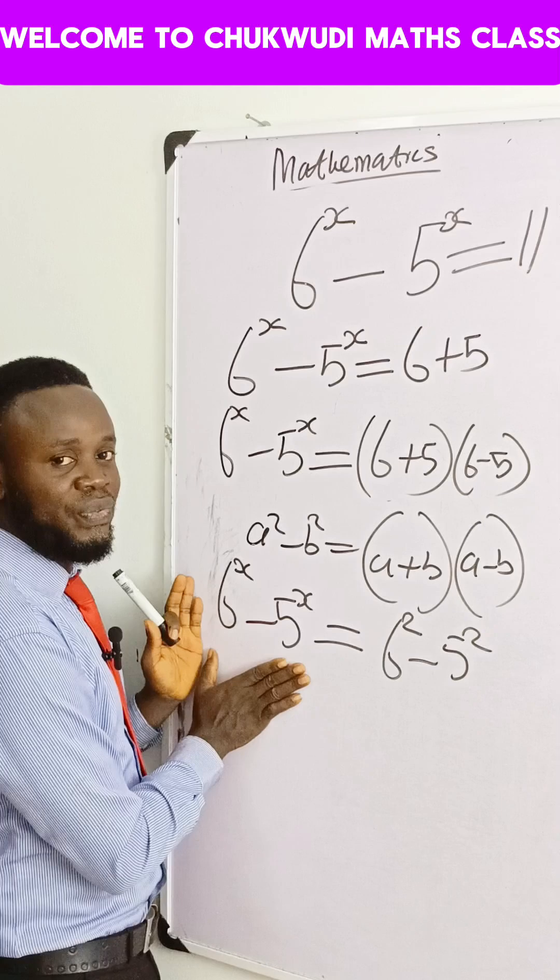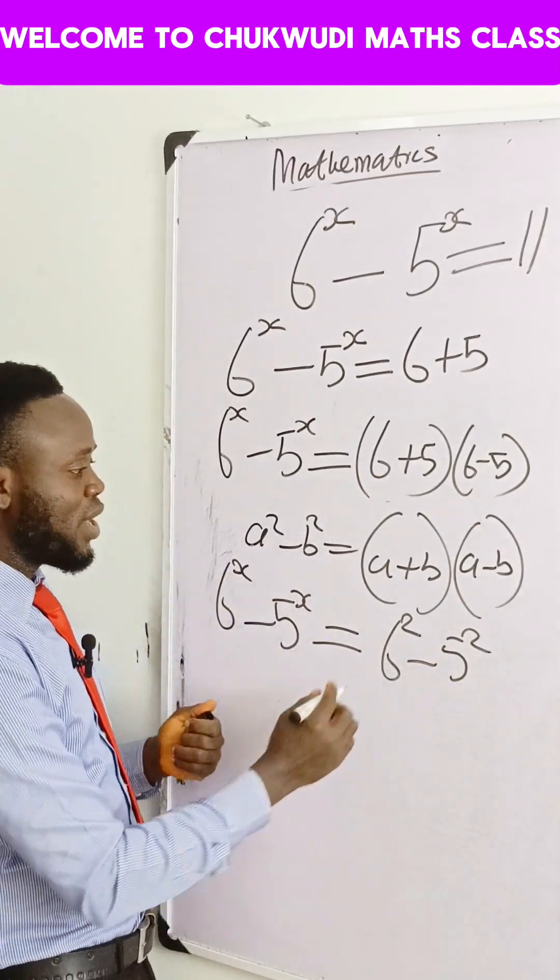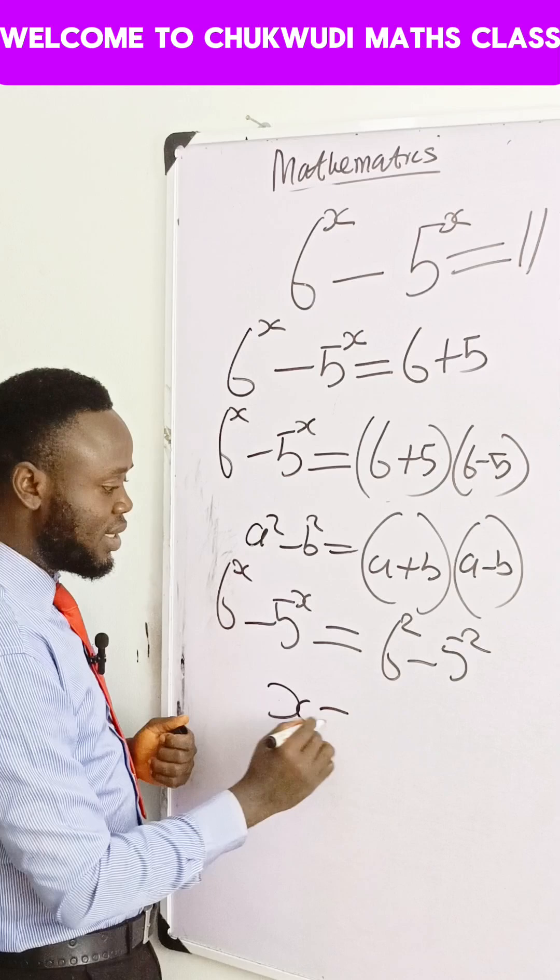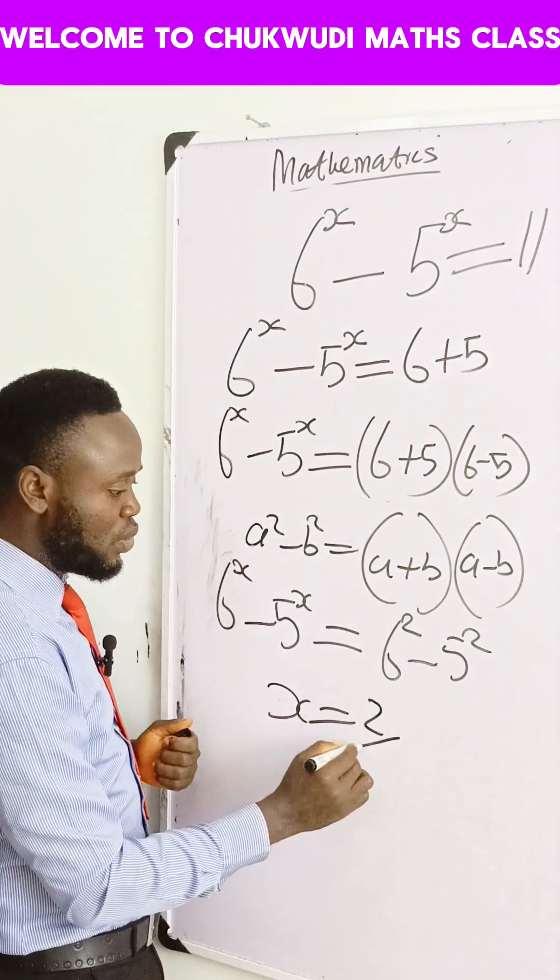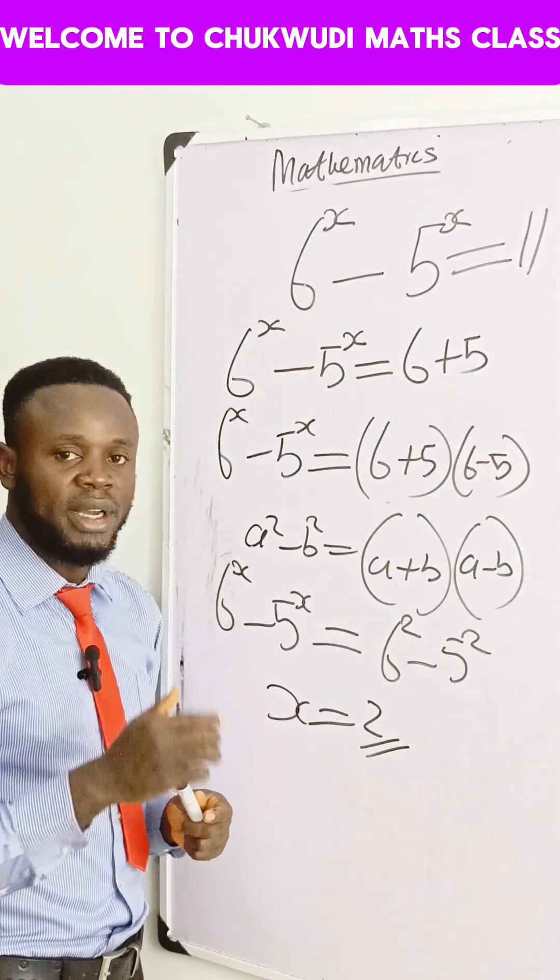So since we have the same thing, what we have in the left-hand side in the same way to what we have in the right-hand side, we can quickly say that our x is equal to 2. That's the final value of x. Thanks for watching and see you in my next video.